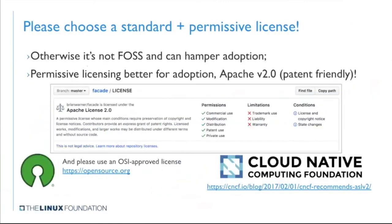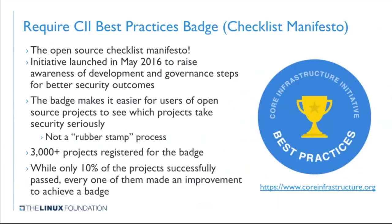Now for some best practices and lessons learned over the years within the TODO Group and from CNCF. Using standardized licenses is great — OSI and FSF approved licenses. We generally recommend permissive licenses, particularly Apache 2, due to its patent friendliness. We detail in a CNCF blog post why we explicitly recommend Apache. If your goal is true wide adoption, permissive licenses generally work best, and preferably ones that have some language to deal with patents.